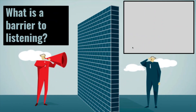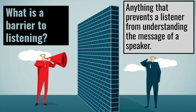First, let's define what a barrier to listening is. A barrier is something that blocks or protects — in this case, blocks is more appropriate. So a barrier is anything that prevents a listener from understanding the message of a speaker. Whatever gets in your way as a listener that prevents you from understanding the message the speaker is trying to give you — you are experiencing a barrier. We're going to dive into this with a much higher level of specificity, so please stay tuned.